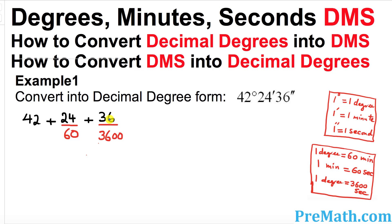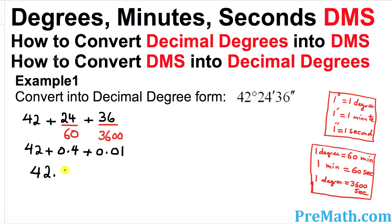There are 3600 seconds in one degree, so once you've divided by 60 and by 3600, use your calculator to put these fractions into decimals. That gives you 42 plus 0.4 plus 0.01. Adding these numbers together gives 42.41 degrees. That is our complete answer — we started with DMS form and converted it to decimal degree form.